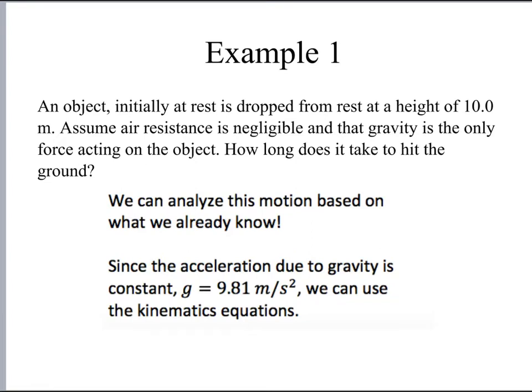So let's look at some examples. An object initially at rest is dropped from rest at a height of 10.0 meters. Let's assume that air resistance is negligible and that gravity is the only force acting on the object. The question is then, how long does it take to hit the ground? We can analyze this motion based on what we already know. Since the acceleration due to gravity is constant, little g equals 9.81 meters per second squared, we can use the kinematics equations.